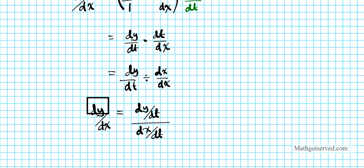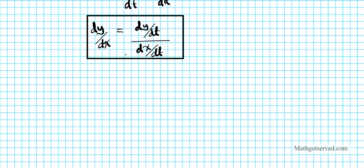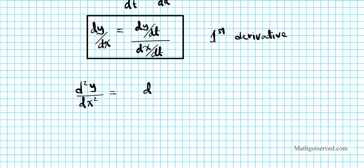What if we're asked to find the second derivative of a function of this nature — x equals x of t and y equals y of t? We have some of the work done and we're going to take advantage of this in a minute. So what we're looking for is d squared y dx squared. This can be written as d times dy over dx, divided by dx — remember dx squared basically affects these two, it's dx squared.